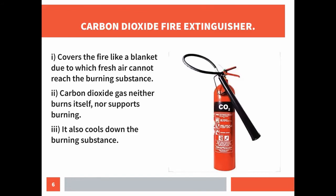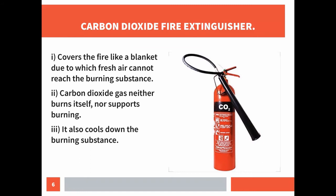Electrical fires are extinguished by using a carbon dioxide gas fire extinguisher. You may have seen in big malls, hospitals, or government offices a red cylinder fixed to the wall — that is the fire extinguisher. It is a portable apparatus used to put out accidental fires and is painted red for easy identification in emergencies.